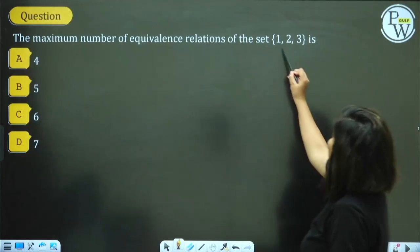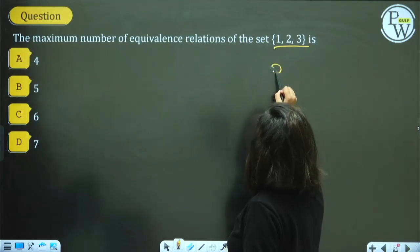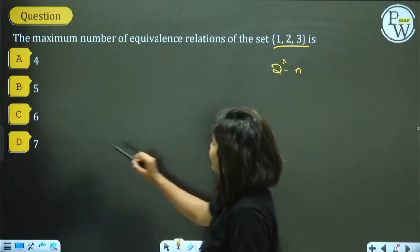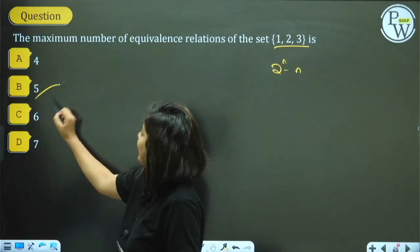Maximum number of equivalence relations on a set: using the formula 2^(n−1) − n. For n=3: 2^(3−1) − 3 = 2² − 3 = 4 − 3 = wait, 2^(2^1 - 1) — the answer works out to 5. Already done earlier.